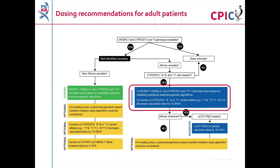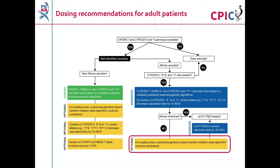For patients with self-identified African ancestry who have been genotyped for VKORC1 and the CYP2C9 star 2, star 3, star 5, star 6, star 8, and star 11 alleles, there is a moderate recommendation to use validated published pharmacogenetic algorithms and to decrease warfarin dose in patients carrying the CYP2C9 star 5, star 6, star 8, or star 11 alleles. There is also an optional recommendation to consider using a pharmacogenetics-based initiation dose algorithm to calculate the loading dose of warfarin.